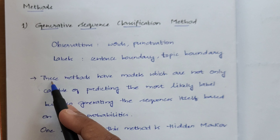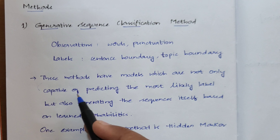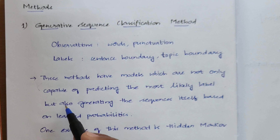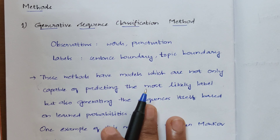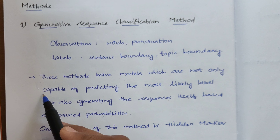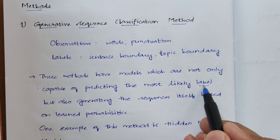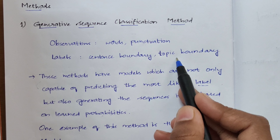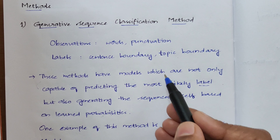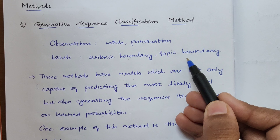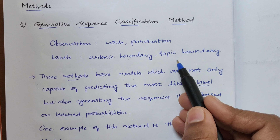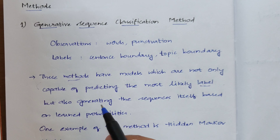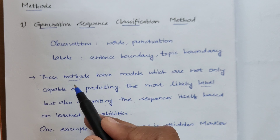The Generative Sequence Classification method has models that are not only capable of predicting the most likely label but also generating the sequences themselves based on learned probabilities. Predicting the most likely label means detecting whether a boundary is a sentence boundary or a topic boundary, helping you find sentence or topic boundaries within a given text.